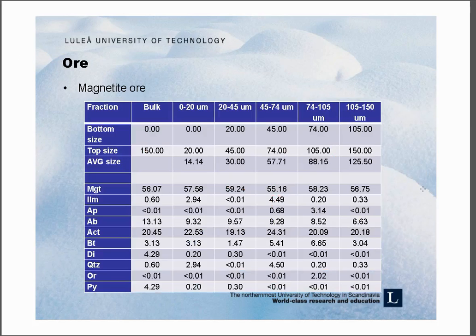This gives the information of the ore. It's a magnetite ore, and has some ilmenite, a little bit of apatite, albite, actinolite, biotite, diopside, quartz, orthoclase, and pyrite.